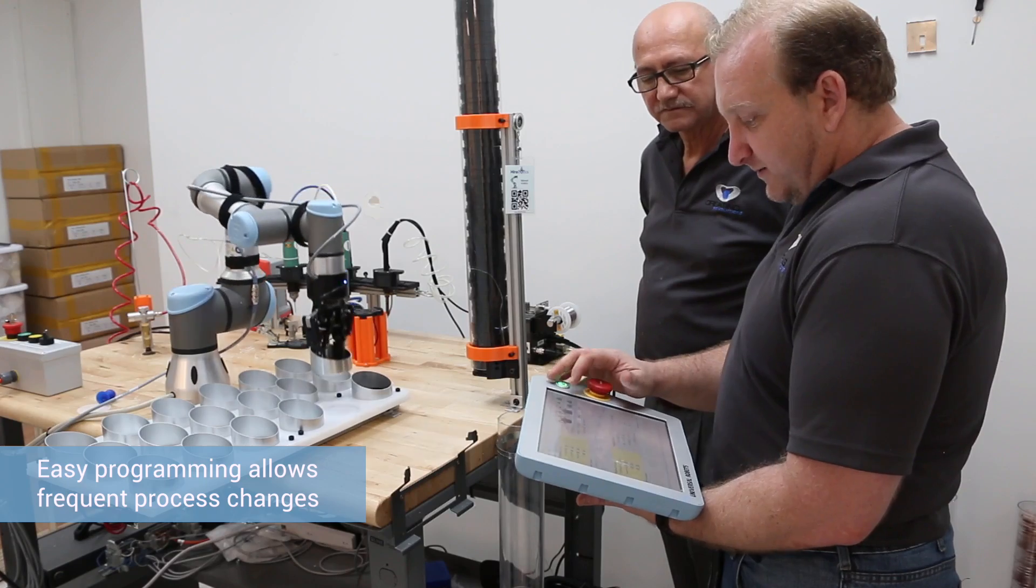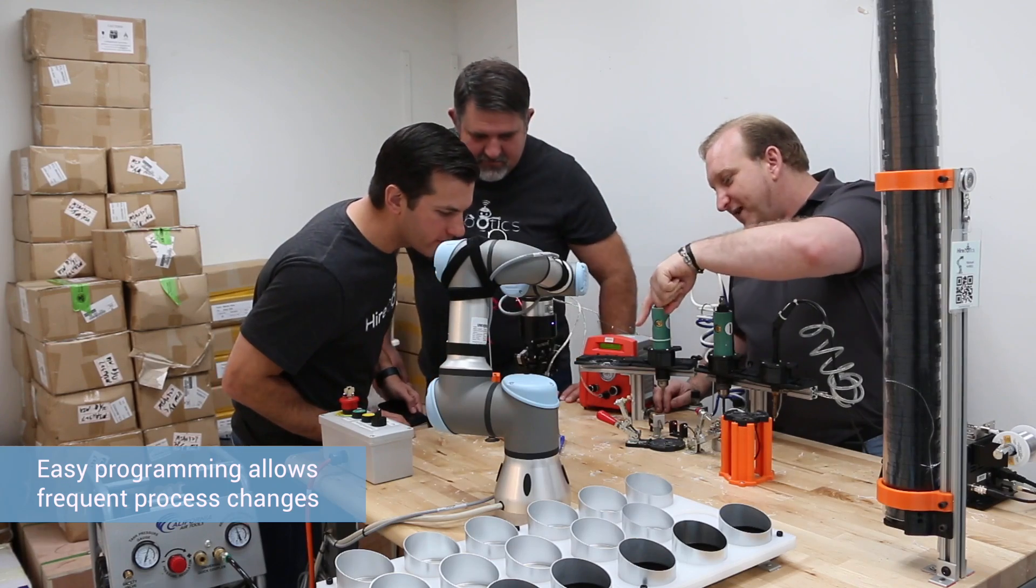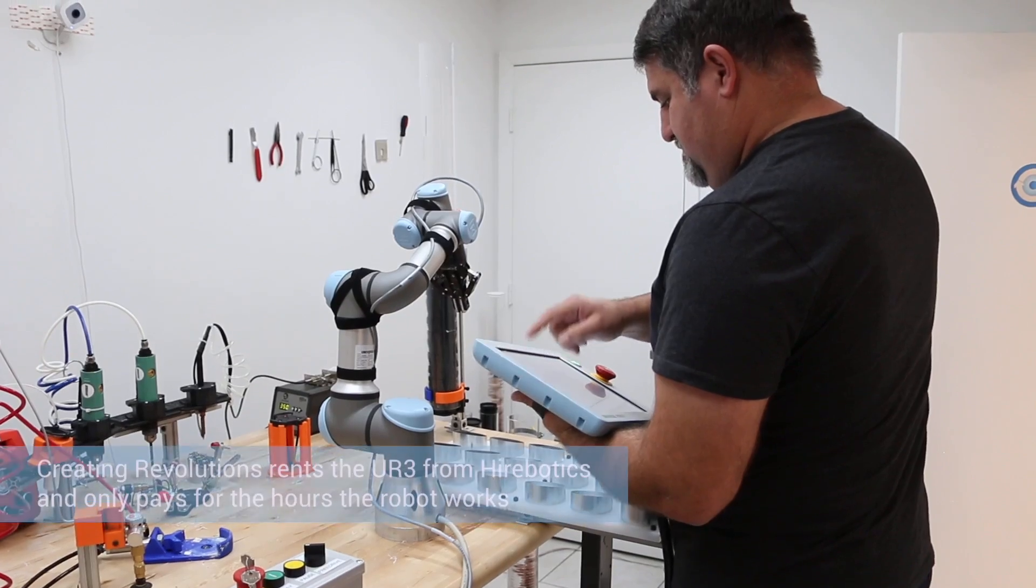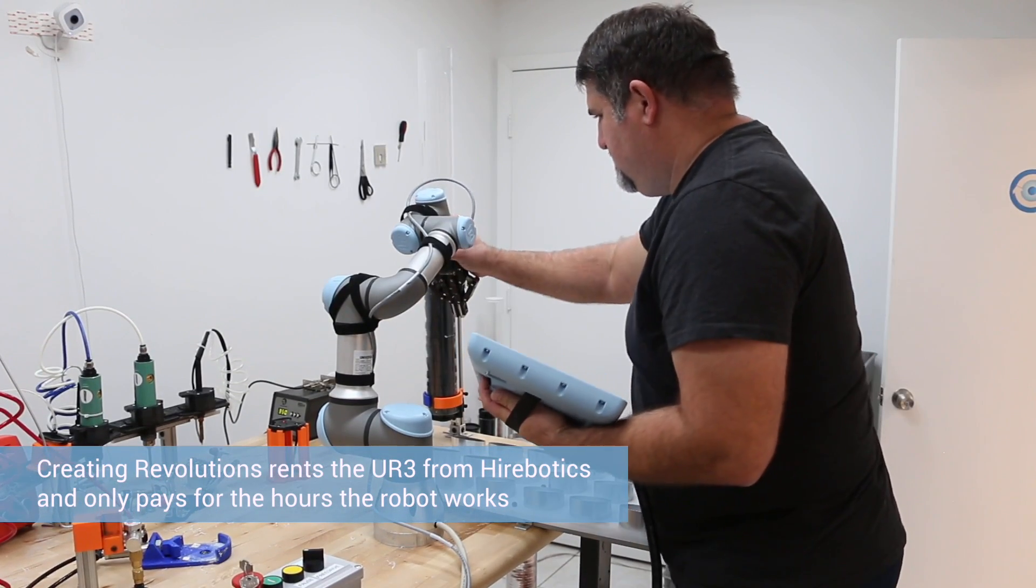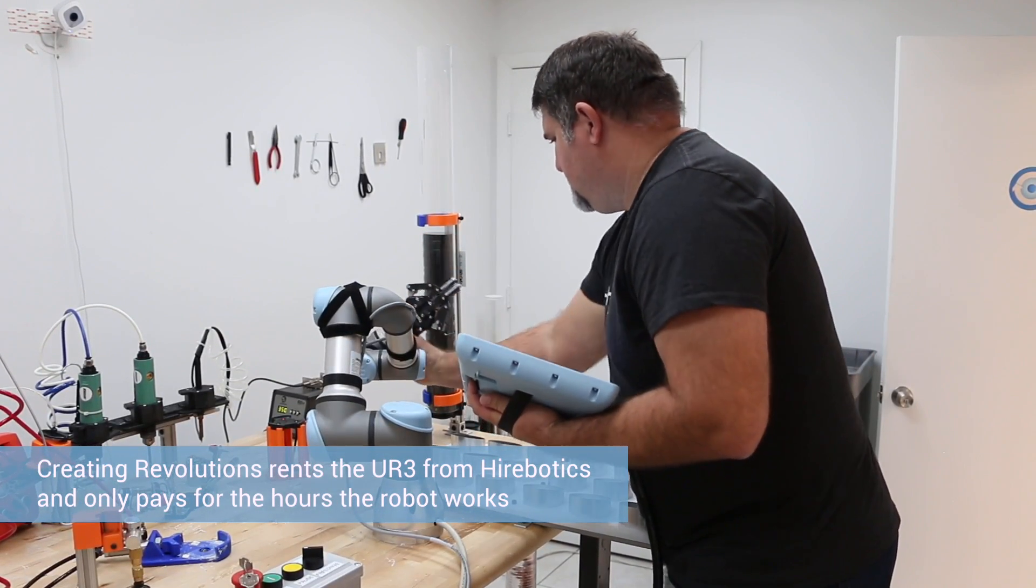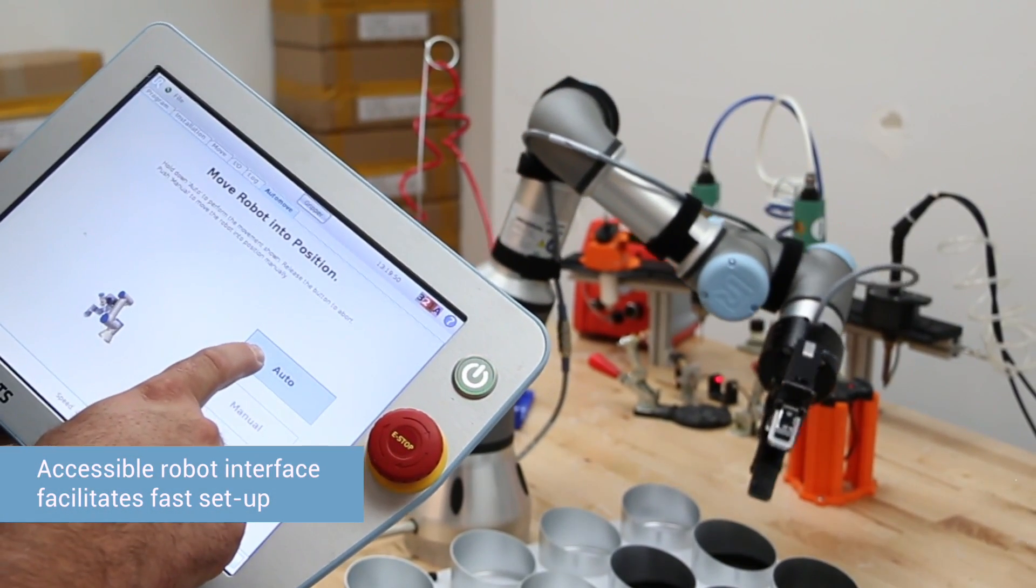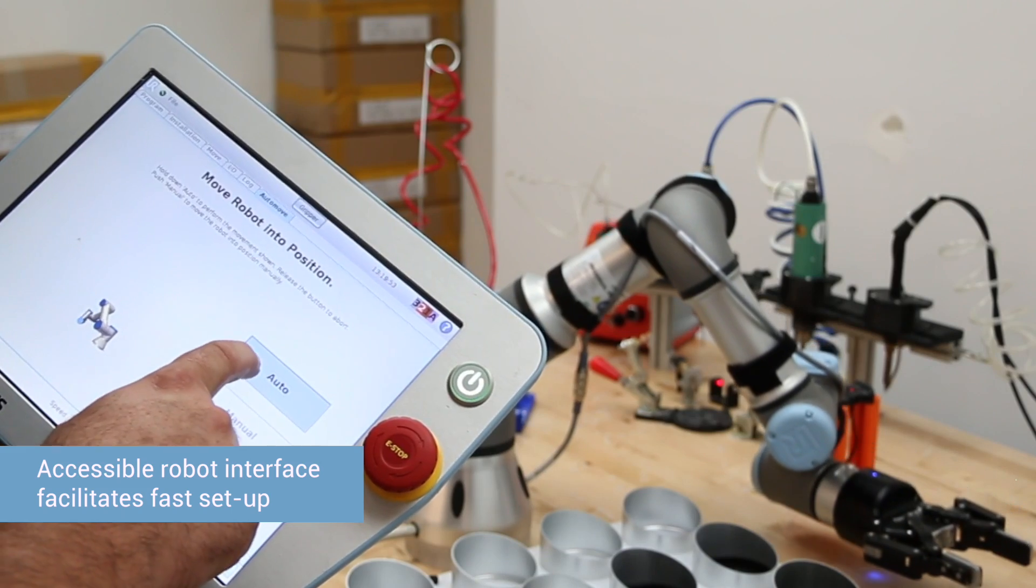We're constantly tweaking the design. With Hyerbotics and the UR3, they've made it much simpler. One of the things we've focused on with Hyerbotics is being able to rapidly deploy our robot workers. Their interface allows us to move very quickly from design through programming and into production.